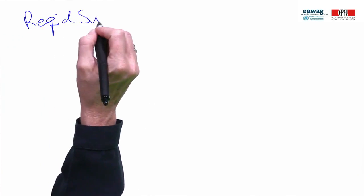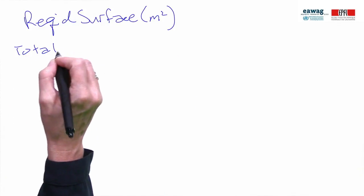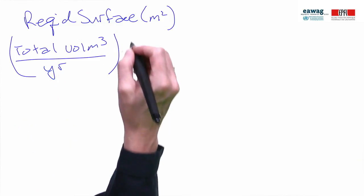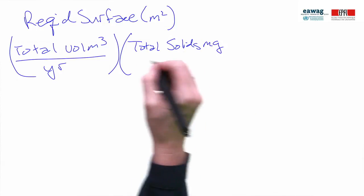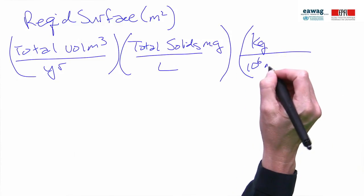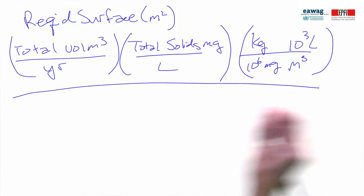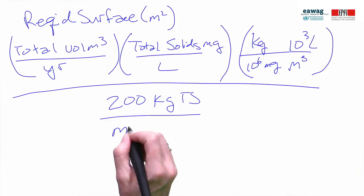If you base loading rates on total solids to determine the required surface area, you need to know the total volume of sludge that will be treated on an annual basis, the average total solids concentration of the sludge — converting units as needed — divided by the loading rate you are going to use. This tells you the required surface area.